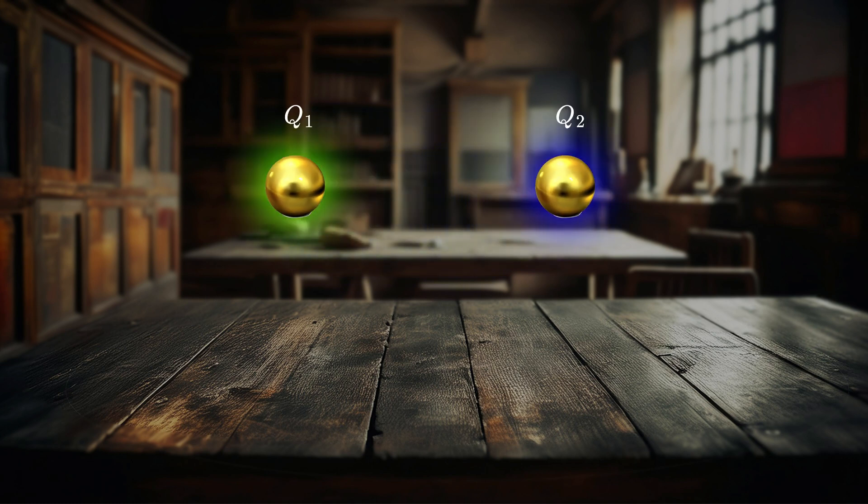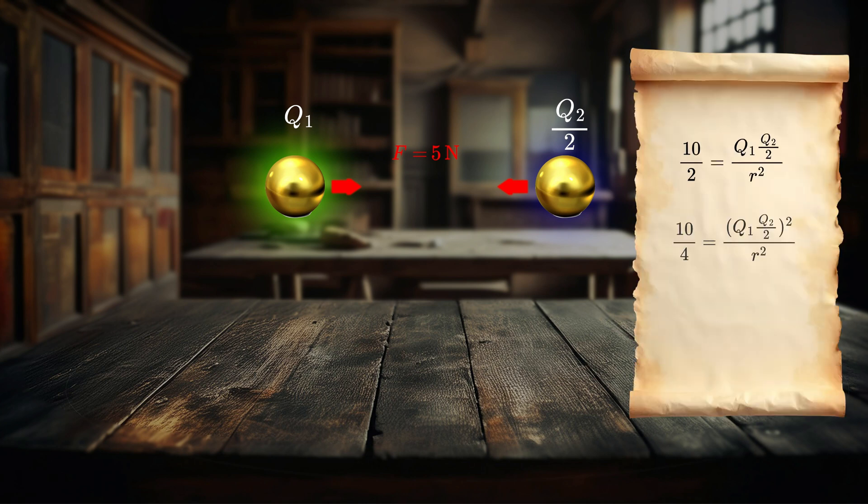Now you can use this rule to half the charge even though you can't know the exact value. Imagine you have two charged bodies that act on each other with a force, let's say 10 newtons. Now you can bring a neutral body and touch one of them and the force decreases to 5 newtons. Now you can test these expressions and you will find out which one is correct.